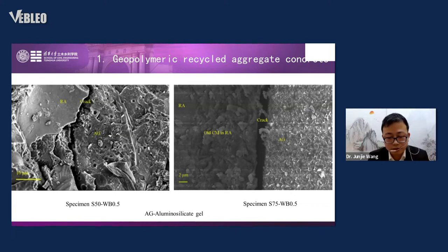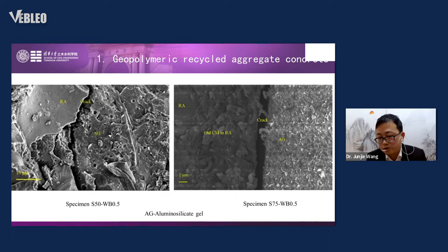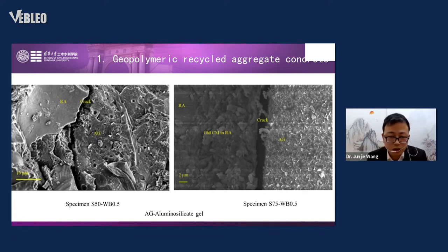The left side is S50, meaning GGBS and fly ash are both 50%, replacing ordinary cement. We can see cracks in the recycled aggregates. The AGE — aluminum silicate gel — is a product of GGBS and fly ash activated by alkaline solutions. On the right side is S75, with 75% GGBS geopolymer. The AGE is much denser than in S50, and there are no cracks in the AGE on the right side, whereas the left side shows cracks in the AGE.